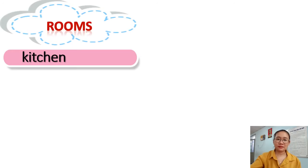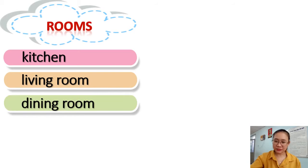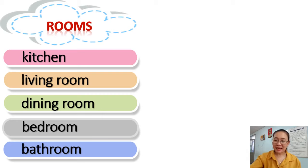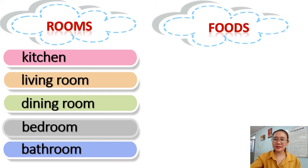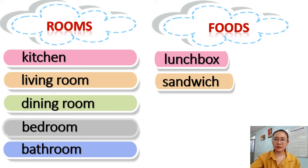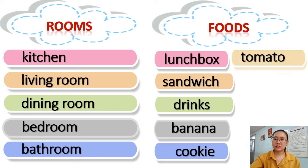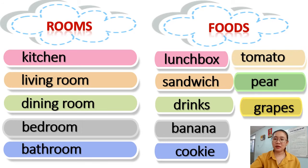We studied about rooms: kitchen, living room, dining room, bedroom, and bathroom. We also studied about food: lunch box, sandwich, grapes, banana, cookie, tomato, pear, and grapes. Good job!